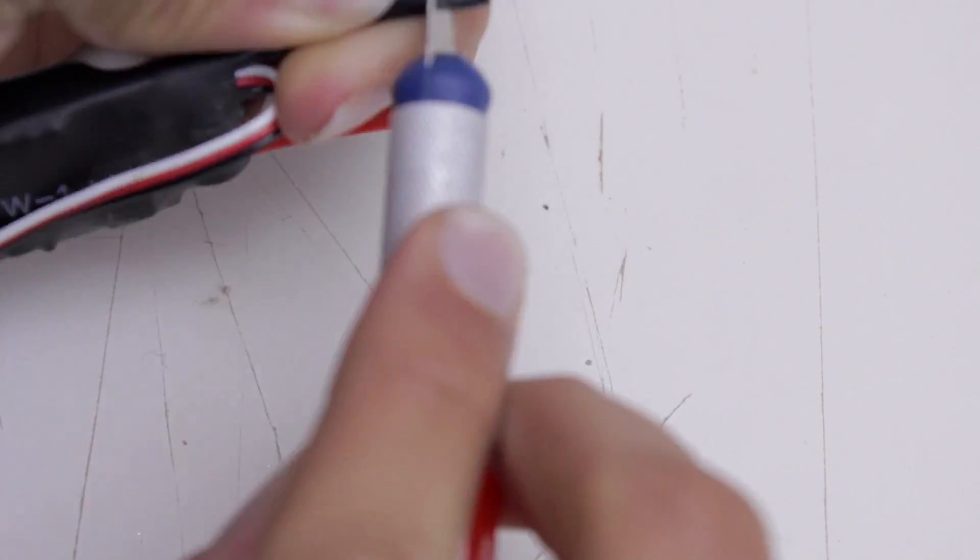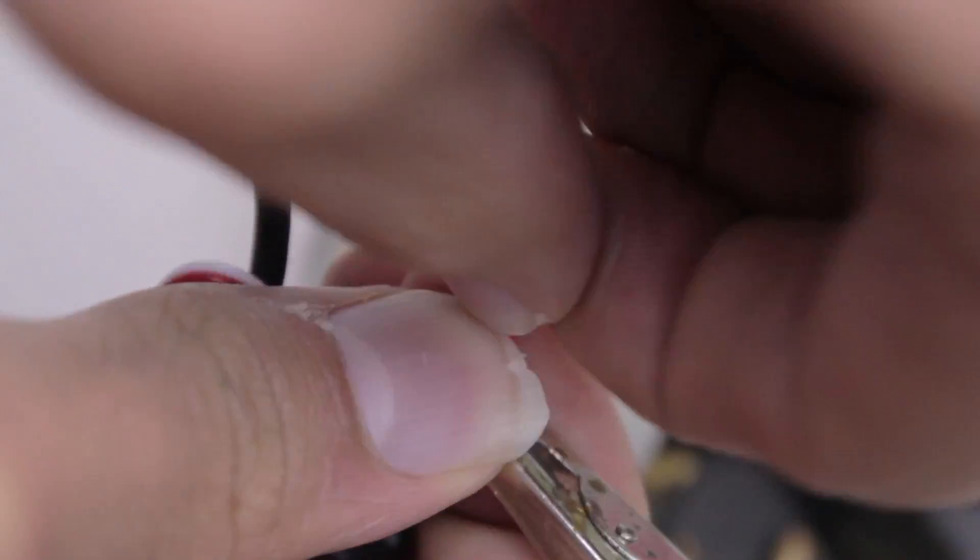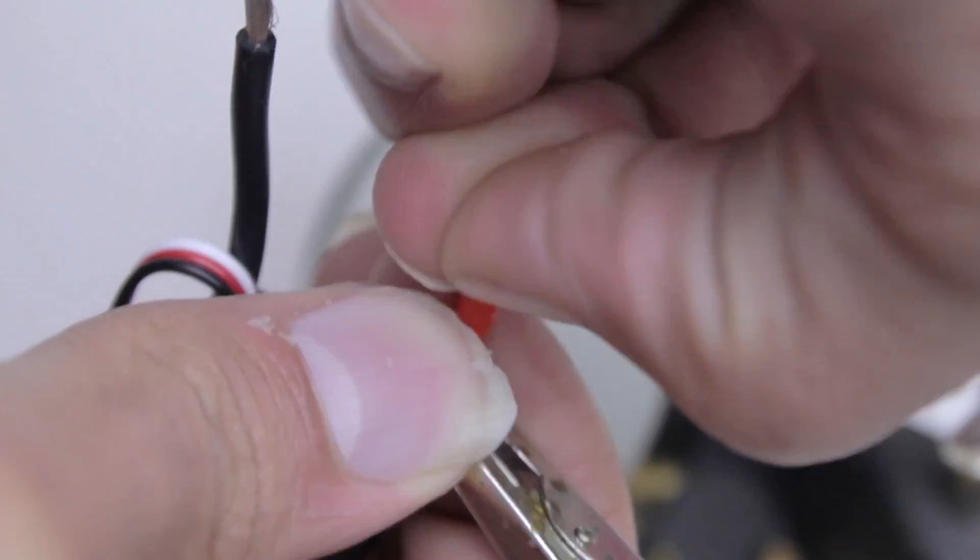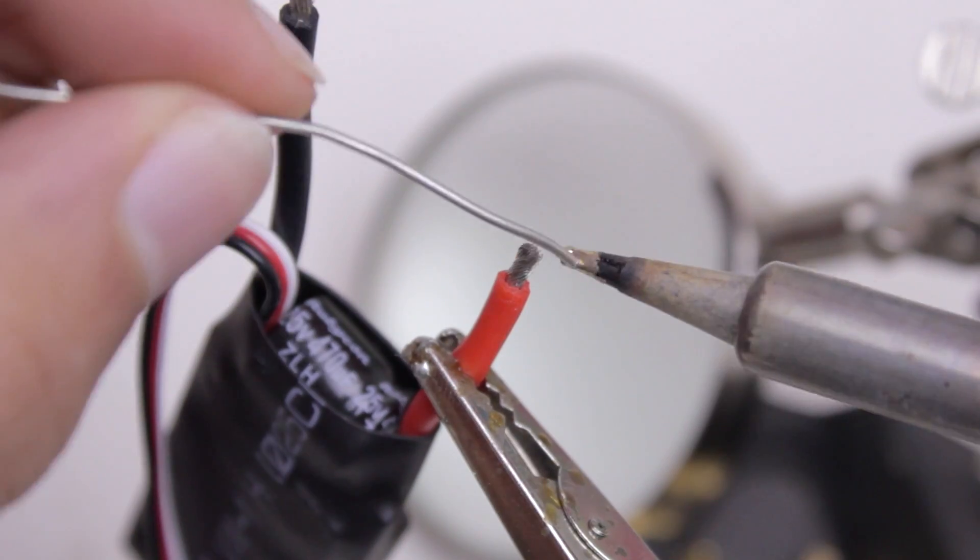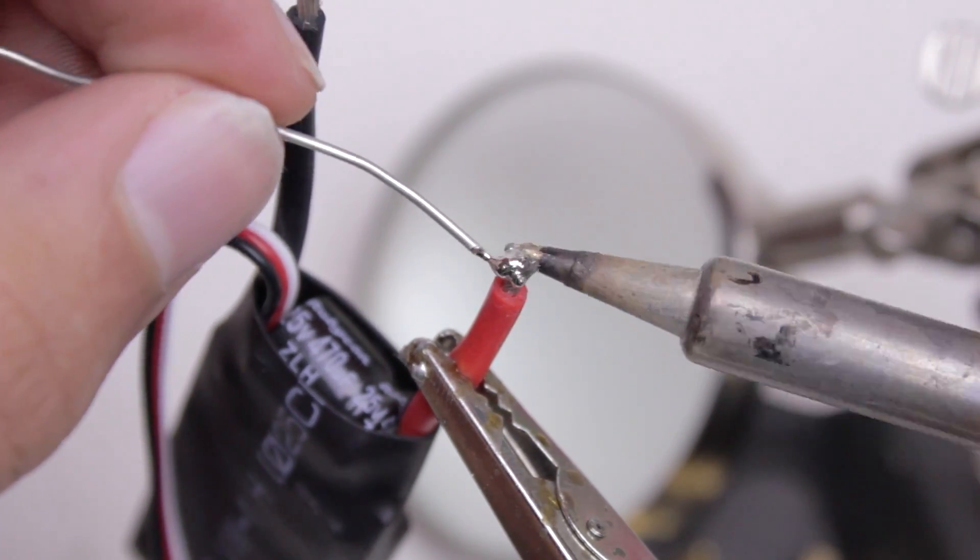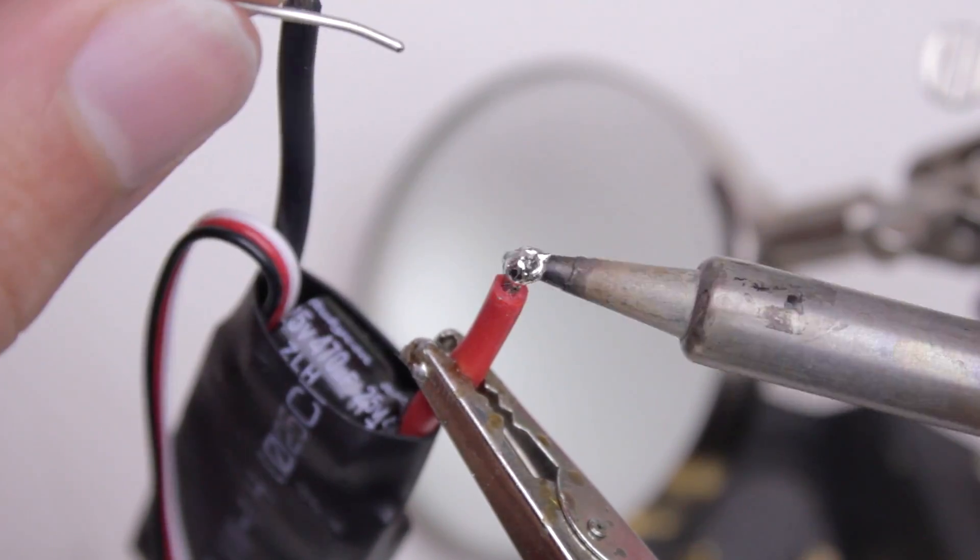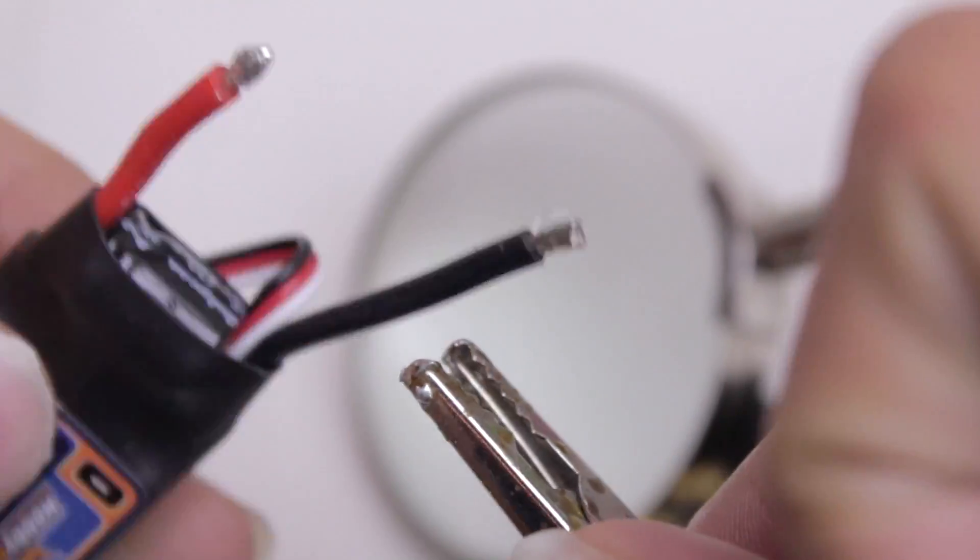Now we're going to cut the insulator off of the ESC wire, twist it, and then do what's called tinning. Tinning is basically coating the wire in solder so that it bonds properly to the solder on the power distribution board.